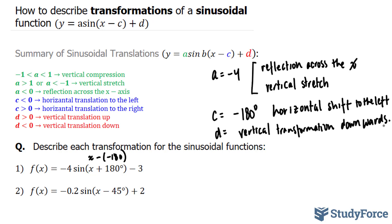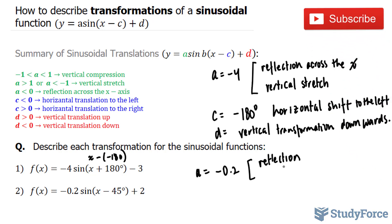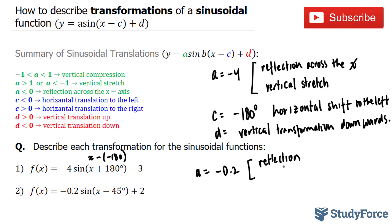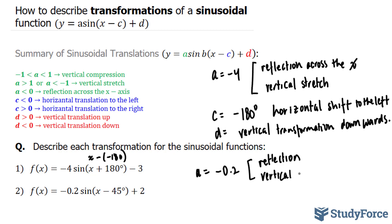What we have here is an a value that is negative 0.2. This tells us two things: a reflection across the x-axis, and it also tells us that you will end up with a wave that is vertically compressed, meaning that it will be shorter than the original sine x. So we have vertical compression.